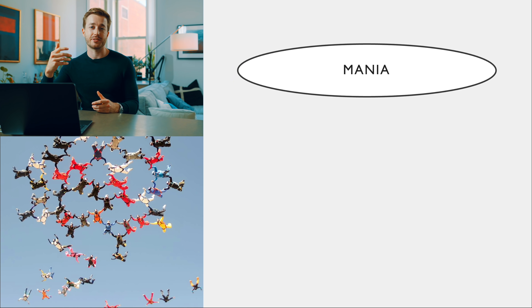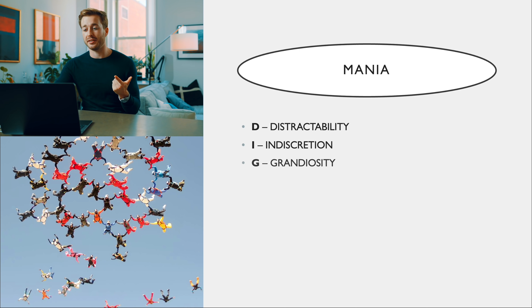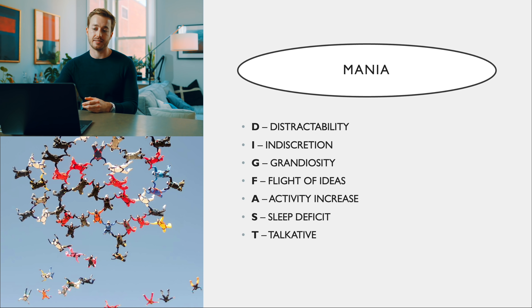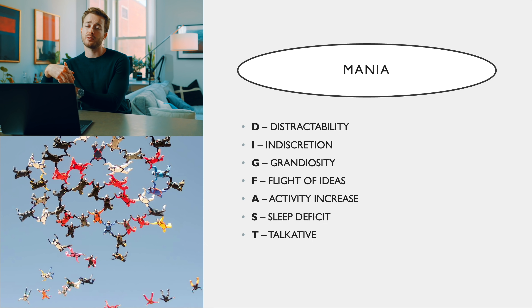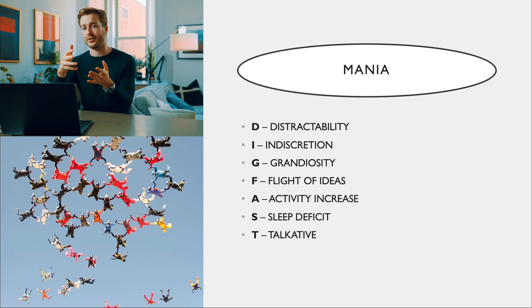The next mnemonic is DIG FAST for clinical signs of mania. D is distractibility, I is indiscretion, G is grandiosity, F is flight of ideas, A is activity increase, S is sleep deficit, and T is talkative. This is useful when talking to someone with bipolar disorder to determine if they're in a manic episode, which can lead to harmful behaviors.